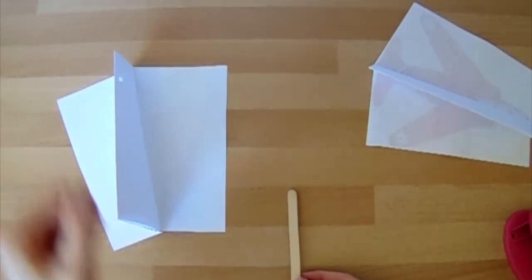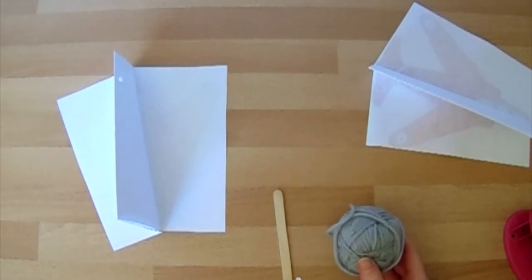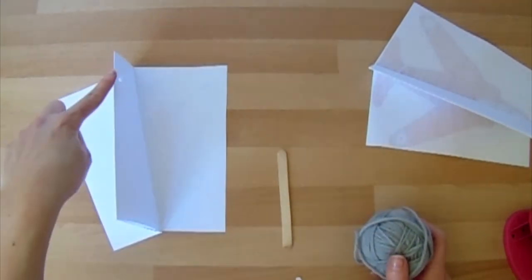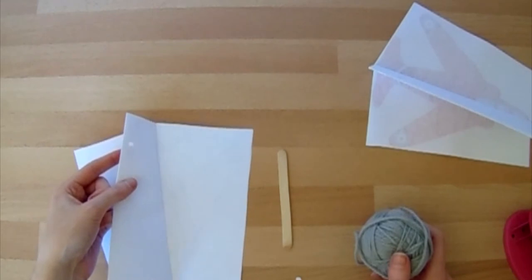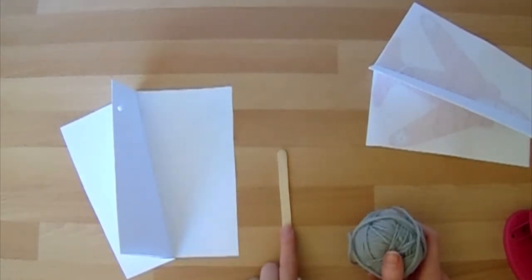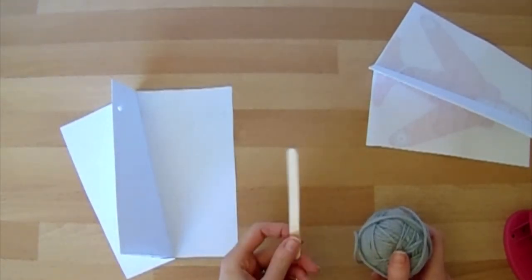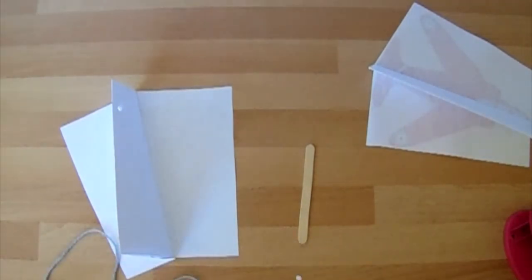Now we've still got our lollipop stick and I've got a ball of wool. Now I'm going to cut a length of wool that I can attach to my little hole punch that I've just made and some extra to wrap round our stick. This will be our handle for our kite. I think I might do two arms length of wool.